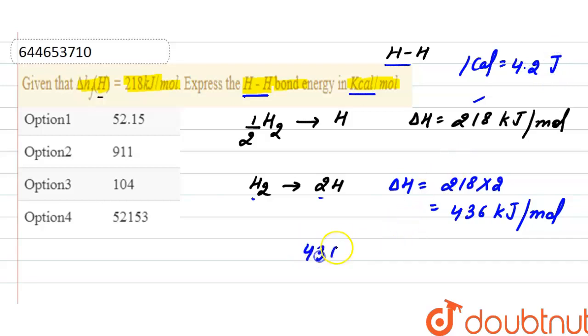And the correct option here will be option third, which is the bond energy of hydrogen in kilocalorie per mole.